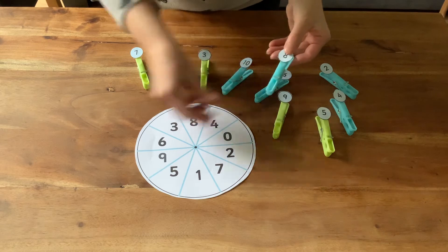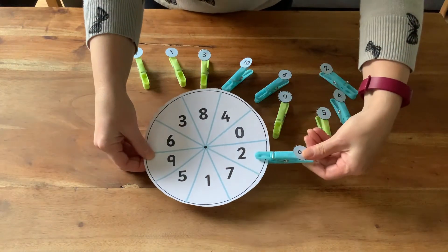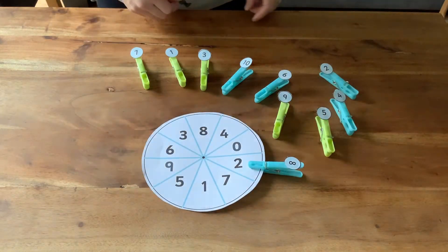8. Now what goes with 8 to make 10? 2. 8 and 2 is 10.